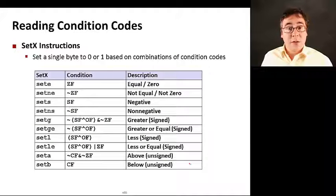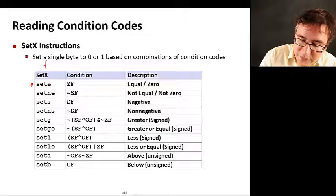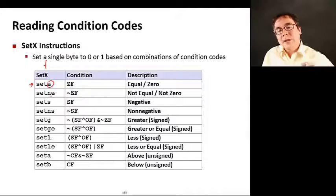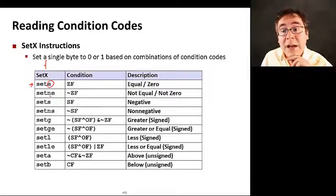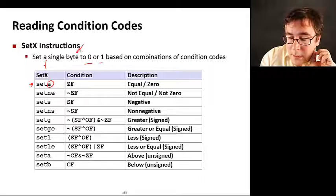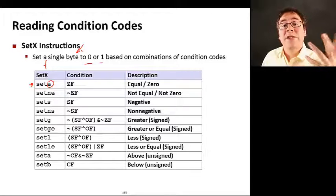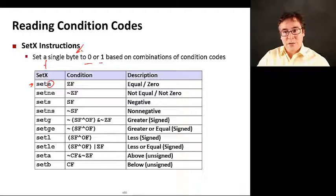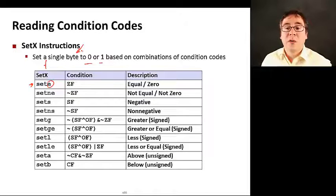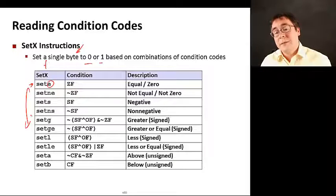We can also read condition codes. There are several instructions called set and a bunch of options here. What they do is they read the condition codes and put the resulting value as zero or one, the whole byte as zero or one, in a general-purpose register so you can actually read and do computation with the contents of the condition code register. Essentially, you get the value of the condition code register and you store it into a general-purpose register.